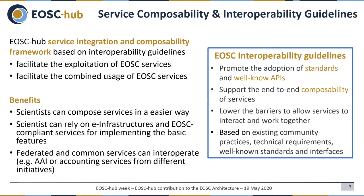What are the benefits of having this framework? First of all, having a wide set of interoperability guidelines would allow scientists to compose services in an easier way. In addition, scientists can rely on infrastructure and use compliant services for implementing basic features — for example, not having to worry about AAI, monitoring, accounting, or orchestration on top of a cloud environment. Furthermore, the interoperability guidelines can help federated and common services interoperate, so that AAI systems or accounting services from different communities can work together if they are compliant with these guidelines.